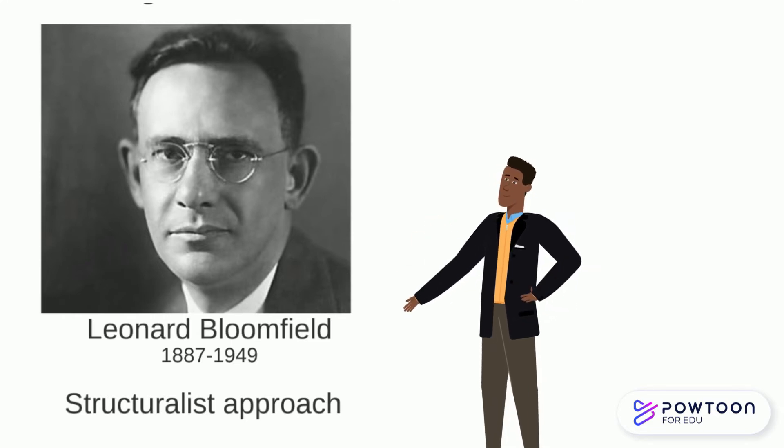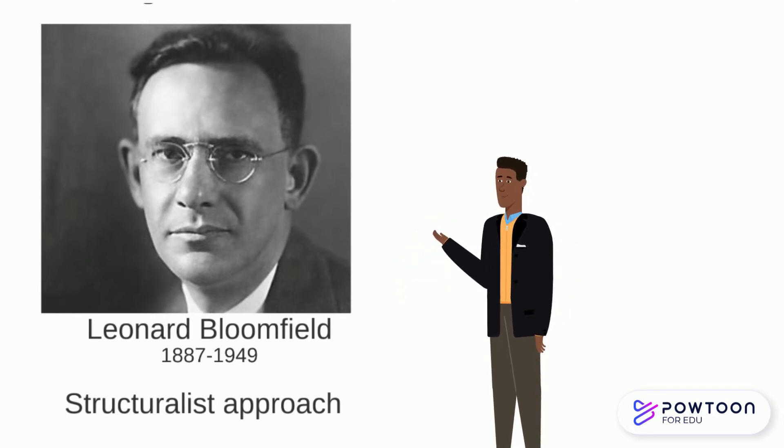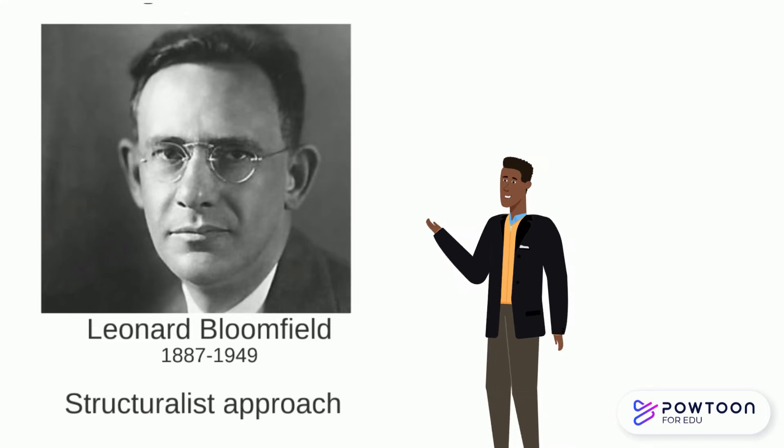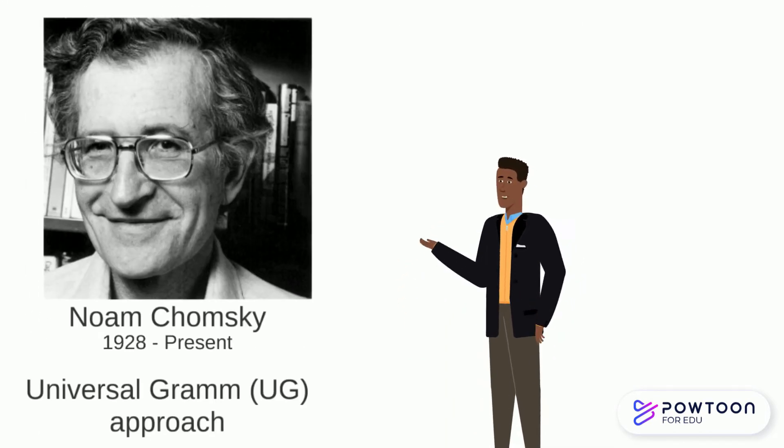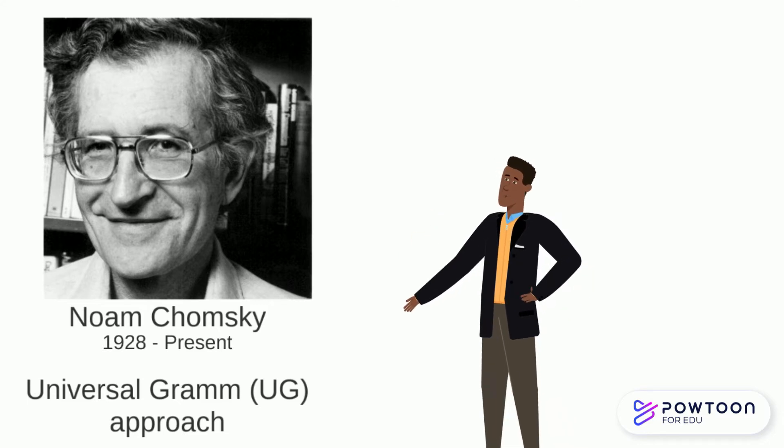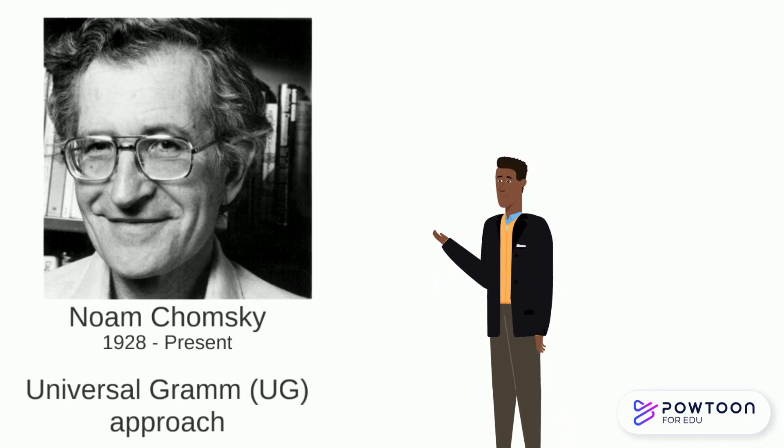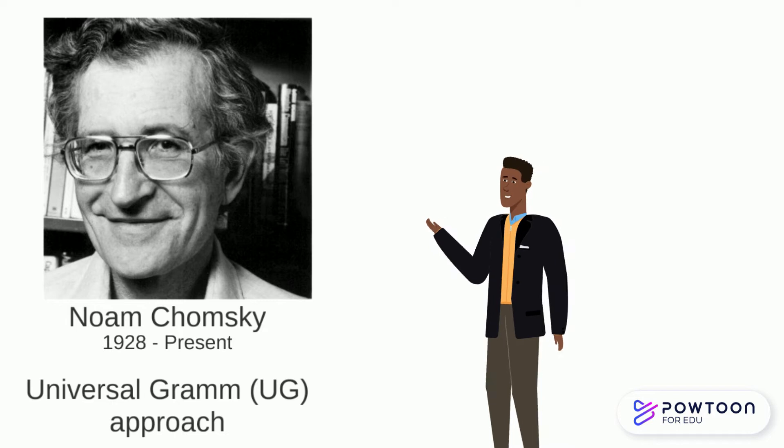The structuralist approach didn't offer up an explanation of language at the deep structure. It wasn't until Chomsky introduced the concept of universal grammar in the 1950s and then refined the theory into generative grammar by the 70s that we had an explanation for how language operates at the deep syntactic level.